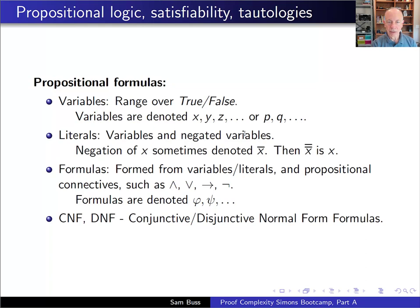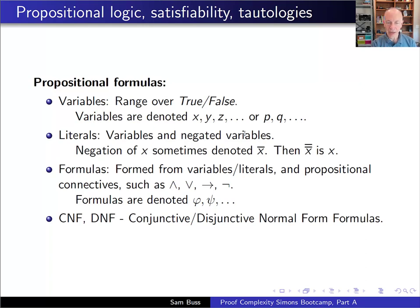In general, we form propositional formulas from connectives starting with either variables or literals, allowing connectives such as and, or, if-then, or not. I'll use lowercase Greek letters like phi and psi to describe formulas. Special cases include conjunctive normal form (CNF) formulas—an and of ors of literals—and disjunctive normal form (DNF) formulas—an or of ands of literals.